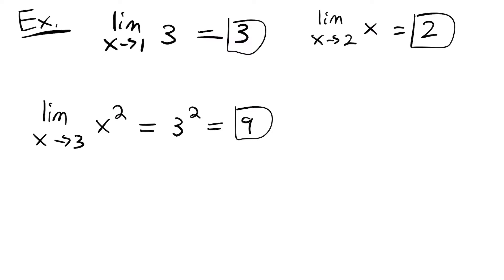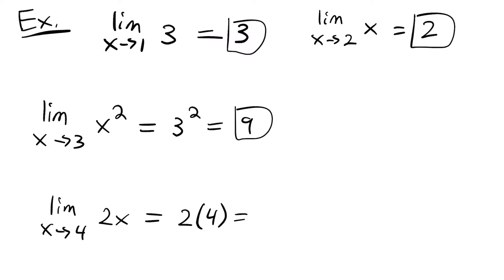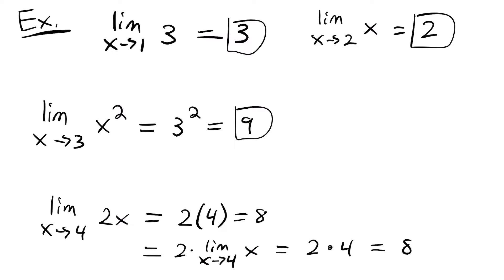What happens if we take the limit as x approaches 4 of the function 2x? We have that rule that if a function is multiplied by a scalar or a constant, we can split that up or just do them at the same time. We could plug in 4 to get 2 times 4, which equals 8. We could also write this as 2 times the limit as x approaches 4 of x, which gives 2 times 4, also equaling 8.